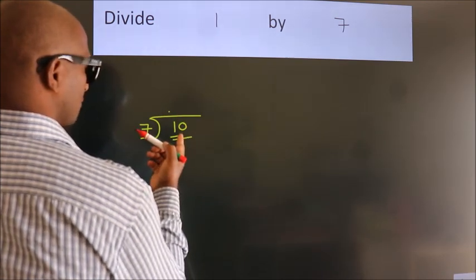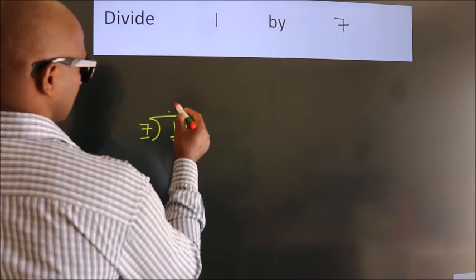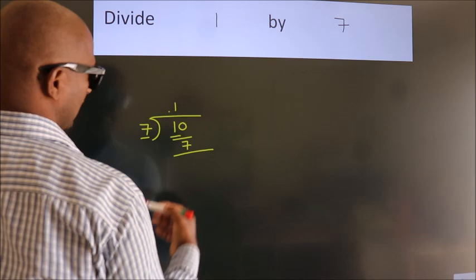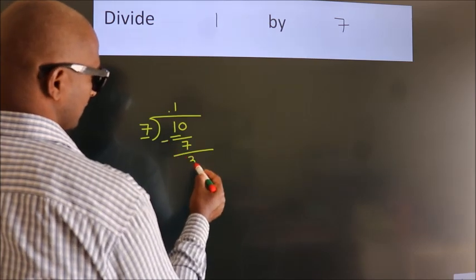A number close to 10 in 7 table is 7 once 7. Now, we should subtract. We get 3.